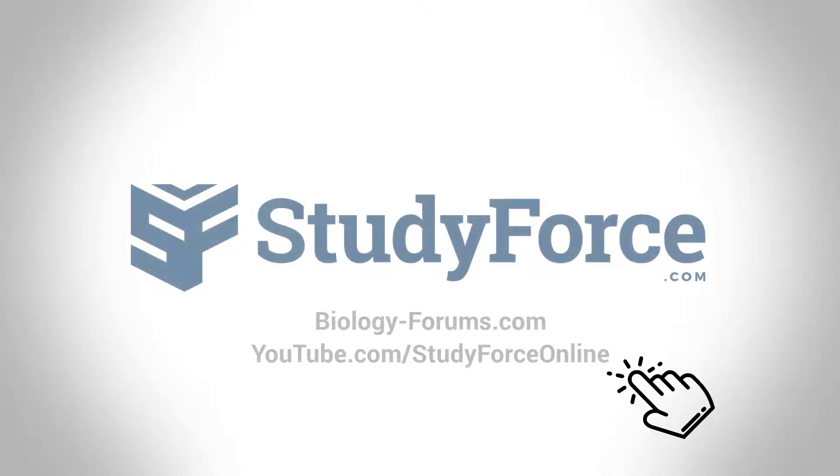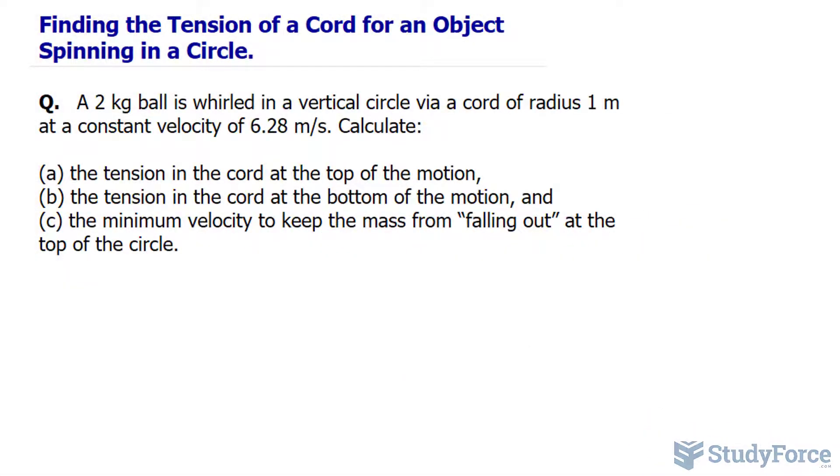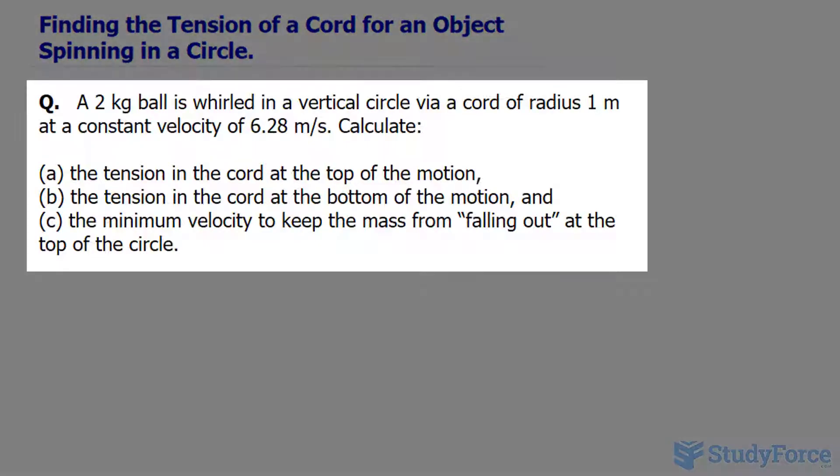In this tutorial, I'll show you how to find the tension of a cord for an object spinning in a circle. The question reads: a 2 kilogram ball is whirled in a vertical circle via a cord of radius 1 meter at a constant velocity of 6.28 meters per second.